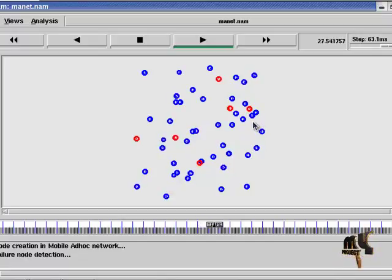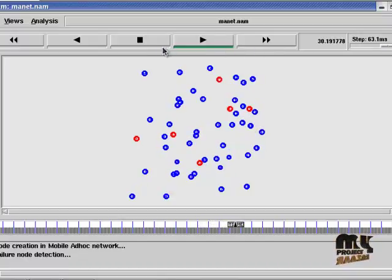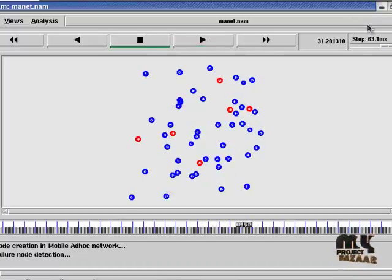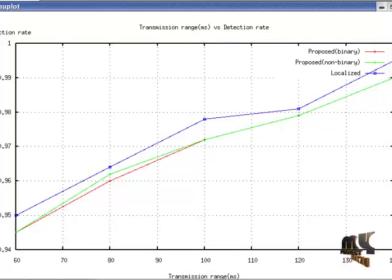The performance is evaluated by using the graph. Go to terminal. This graph shows transmission range versus detection rate.